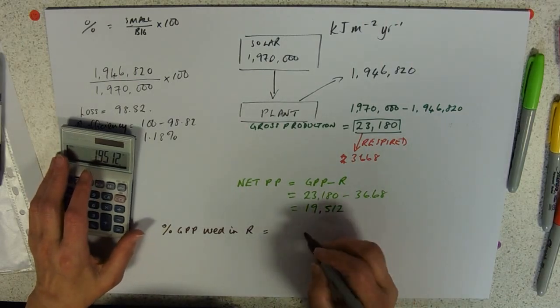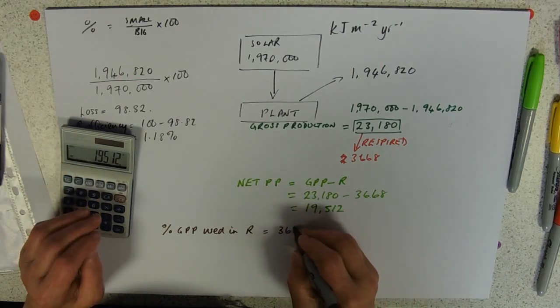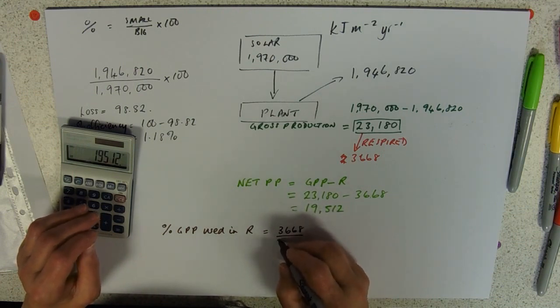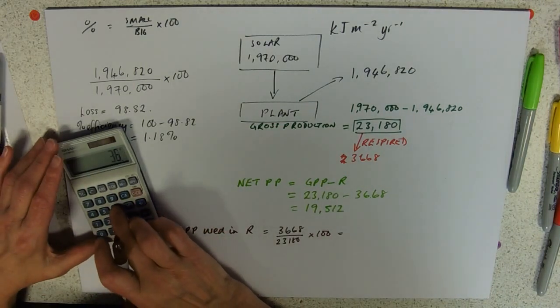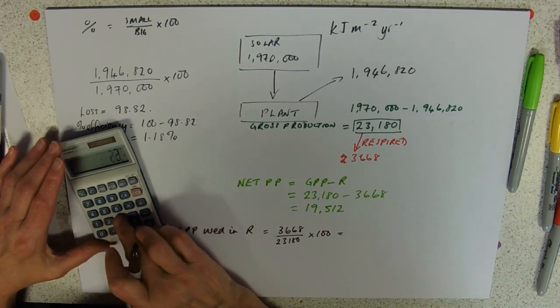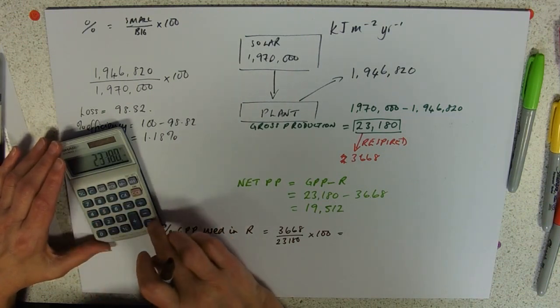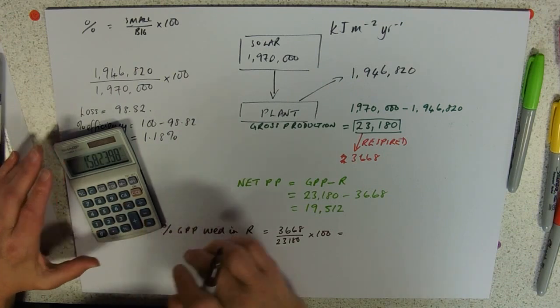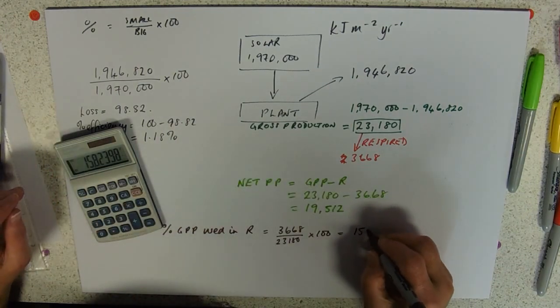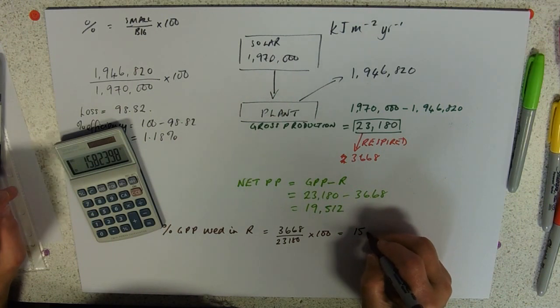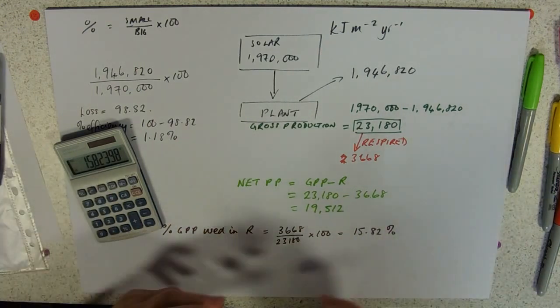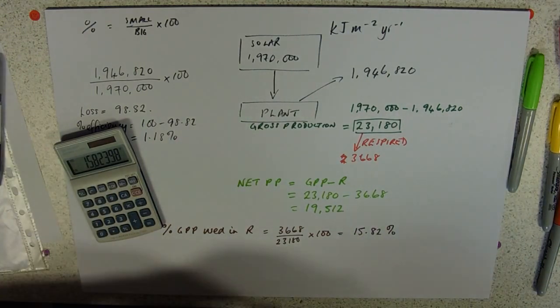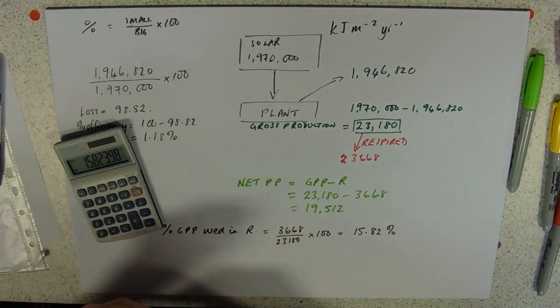Would be little number over big number times a hundred. So that means that fifteen percent of everything fixed has been used in respiration.